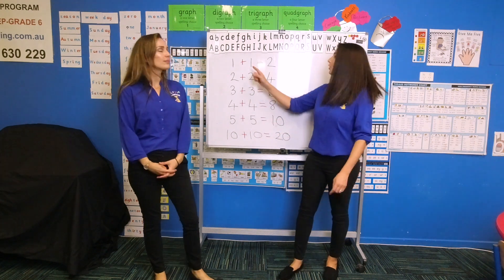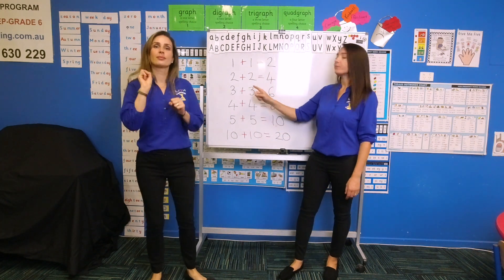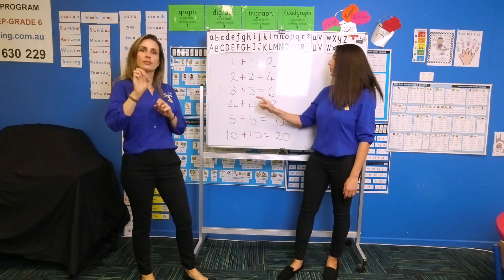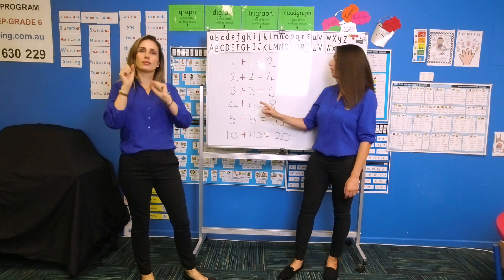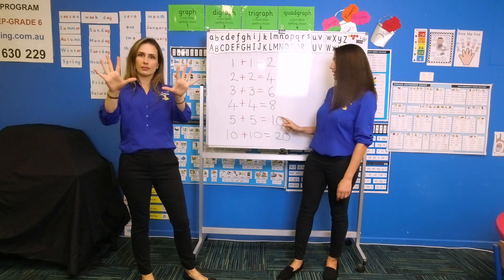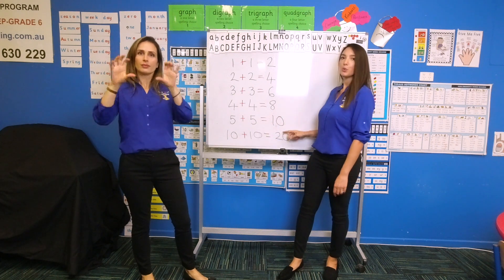I've got them written up on the board. So we've got 1 and 1 is 2, 2 and 2 is 4, 3 and 3 is 6, 4 and 4 is 8, 5 and 5 is 10, 10 and 10 is 20.